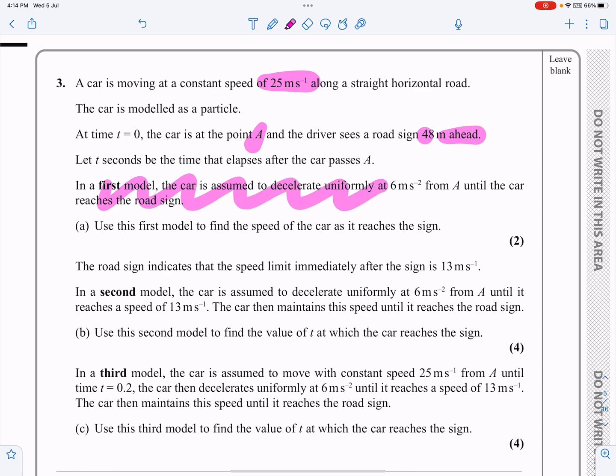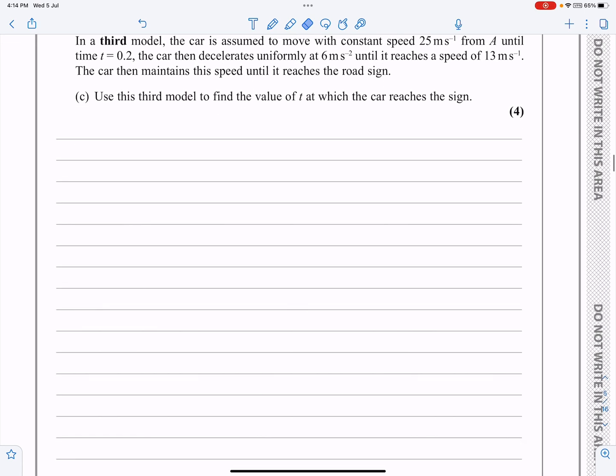In the first model, it decelerates uniformly. The acceleration is just equal to minus six. In the second model, we're going to have a different situation, and in the third model, a different situation again. But let's just focus on doing mainly the first part, and then we'll look at parts B and C.